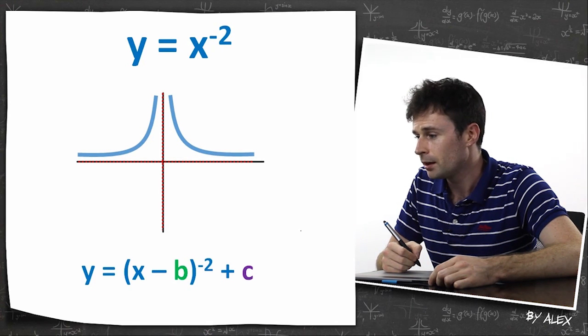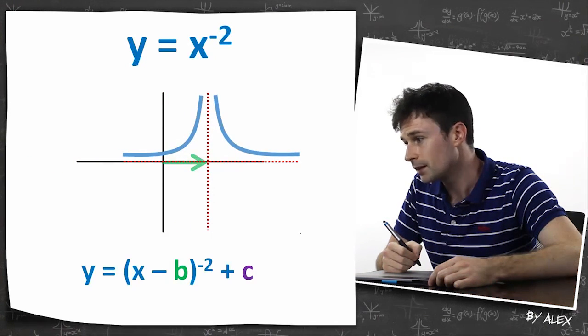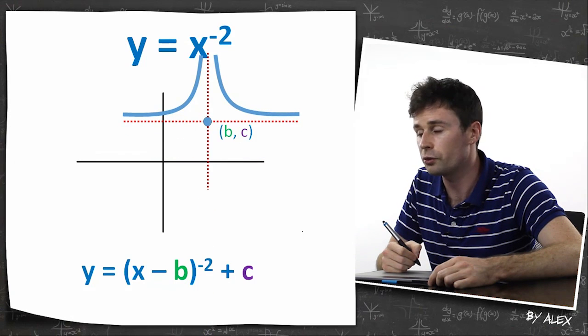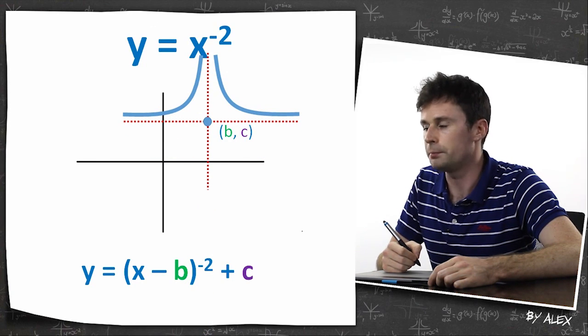Same deal with this bad boy. Say I wanted to move it b, so that would be a b amount, and that would be a c amount. So whatever it is, that point would be b c.